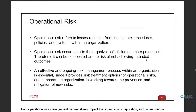The fourth type is operational risk. Operational risks refer to losses resulting from inadequate procedures, policies, and systems within an organization. Operations are the things an organization does on a day-to-day basis to run its business — inability to perform these efficiently and effectively results in losses. An effective and ongoing risk management process is essential as it provides treatment options and supports prevention and mitigation of new risks.